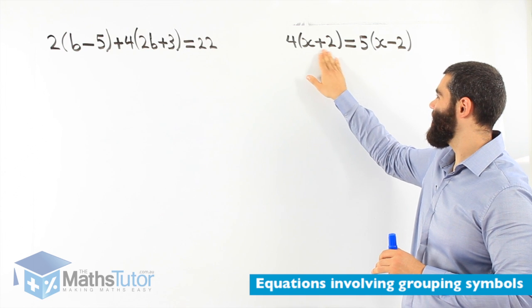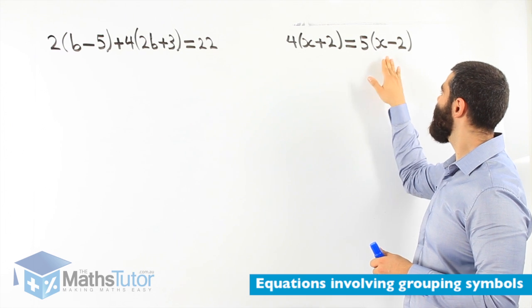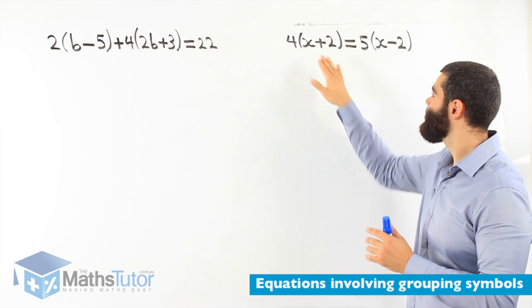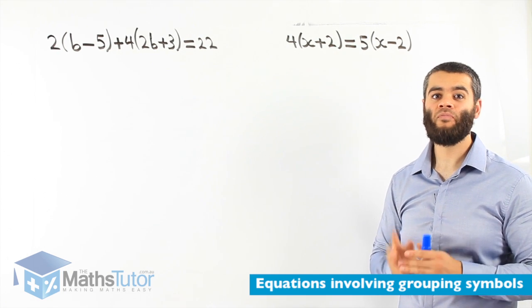4, open bracket, x plus 2, close bracket, equals 5, open bracket, x minus 2, close bracket. We have here grouping symbols on both sides. So, again, what do we do first? We expand.